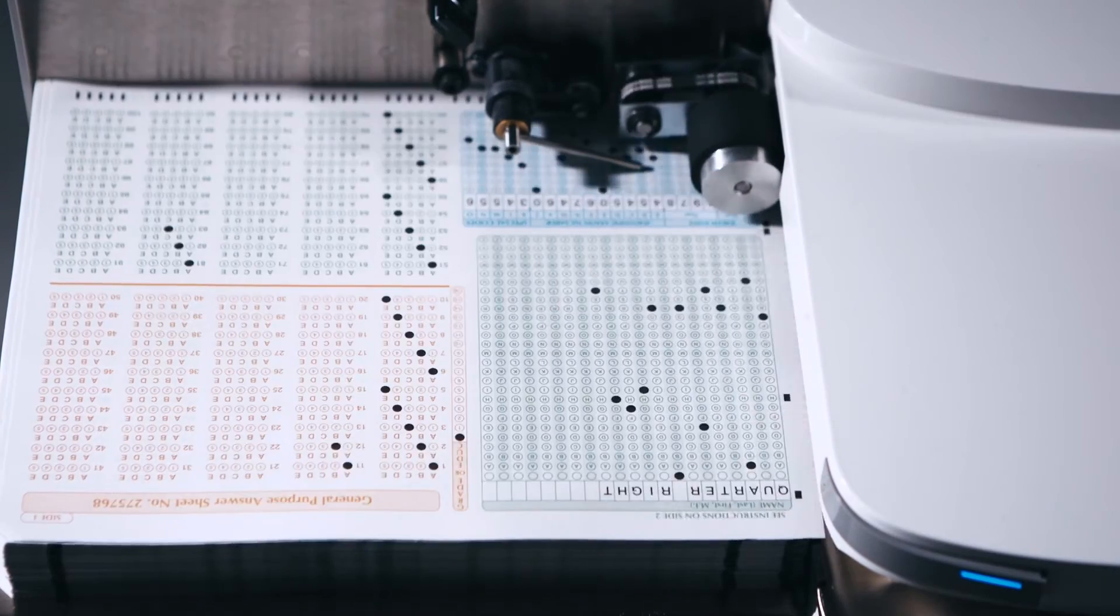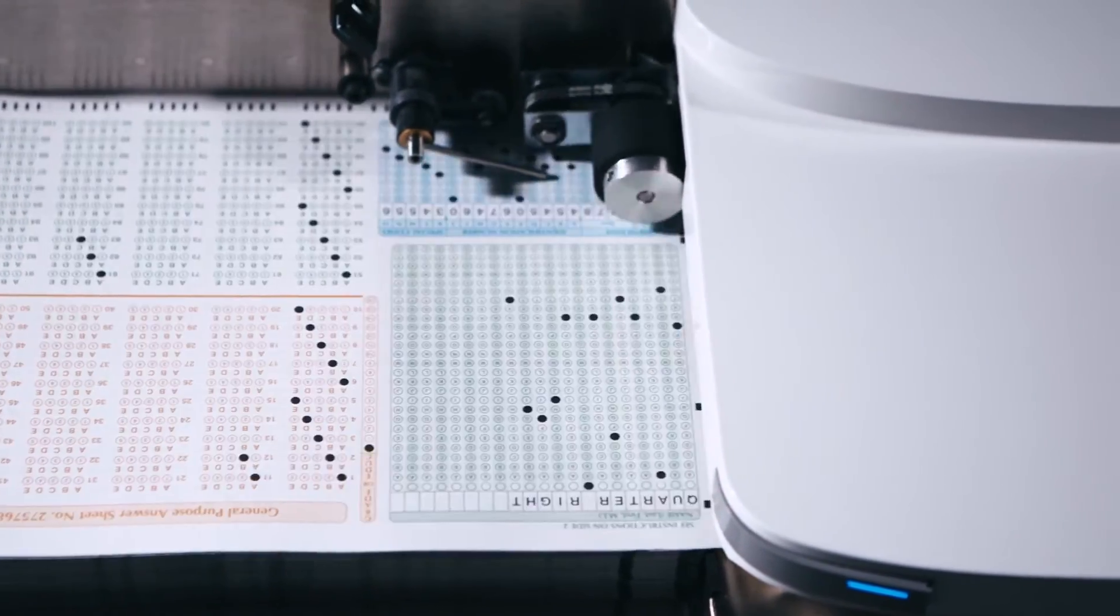High-speed digital arrays collect multiple data types in a single pass: pencil or ink OMR marks, barcodes, handprint, images, and much more.